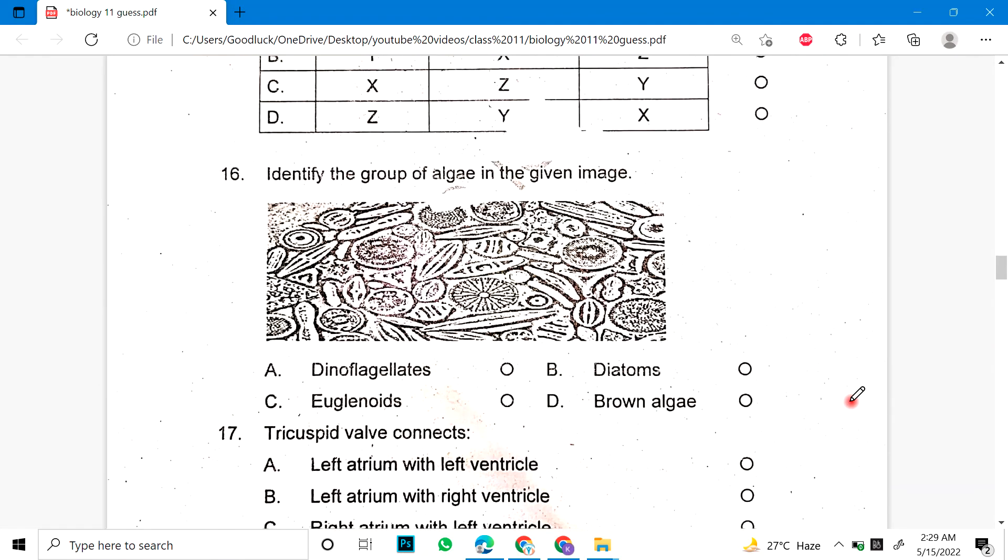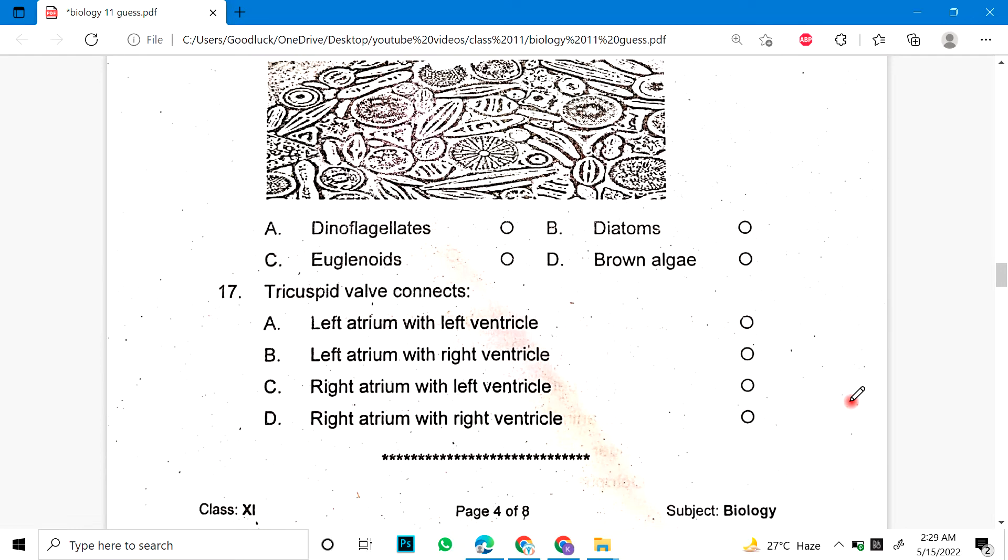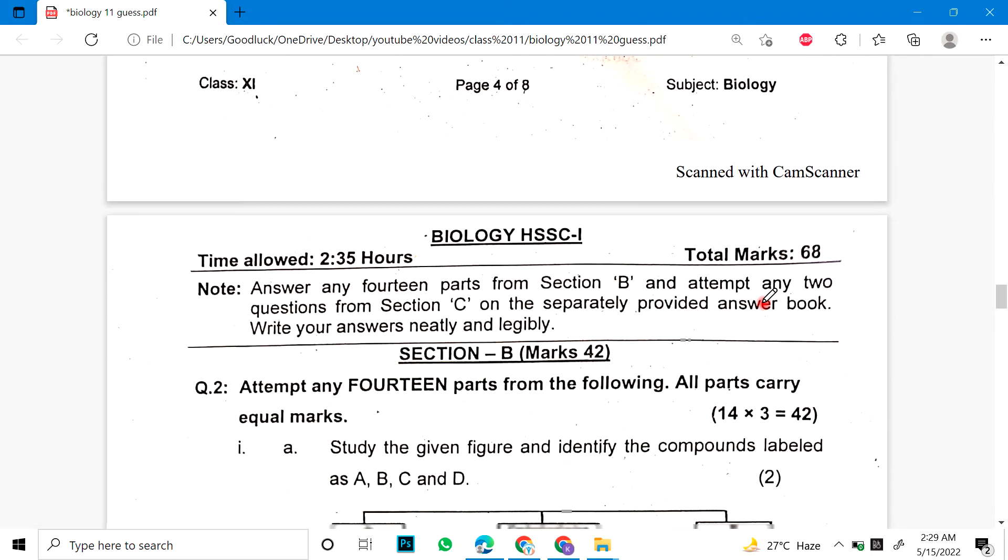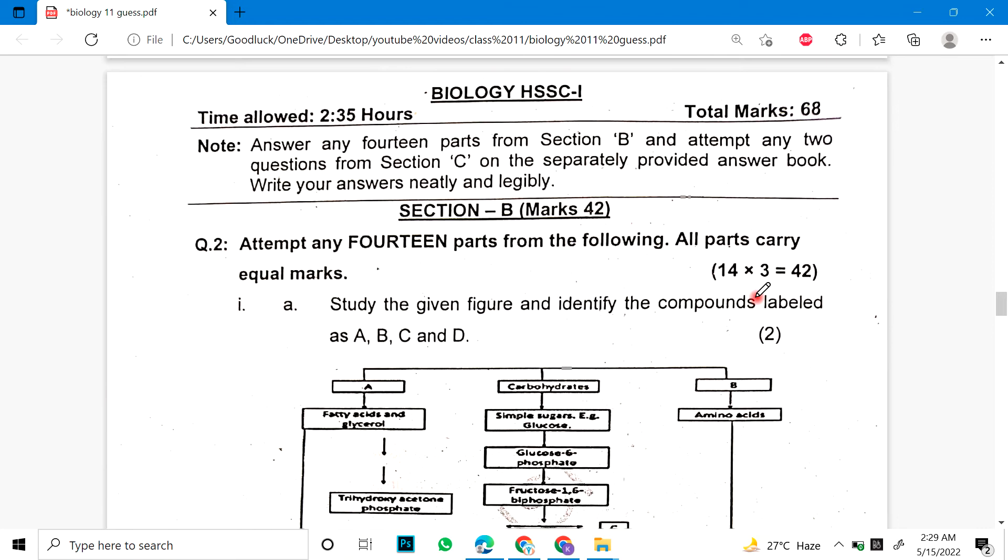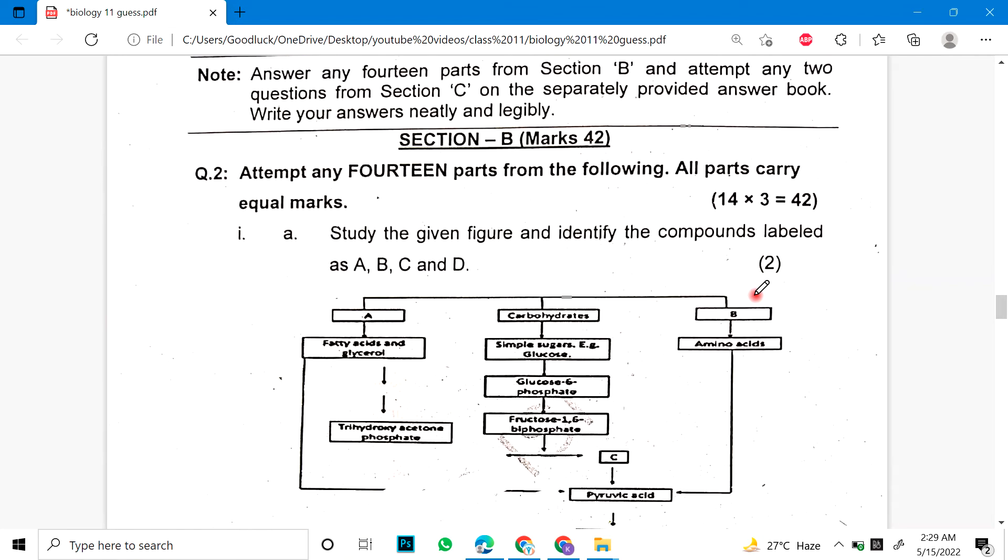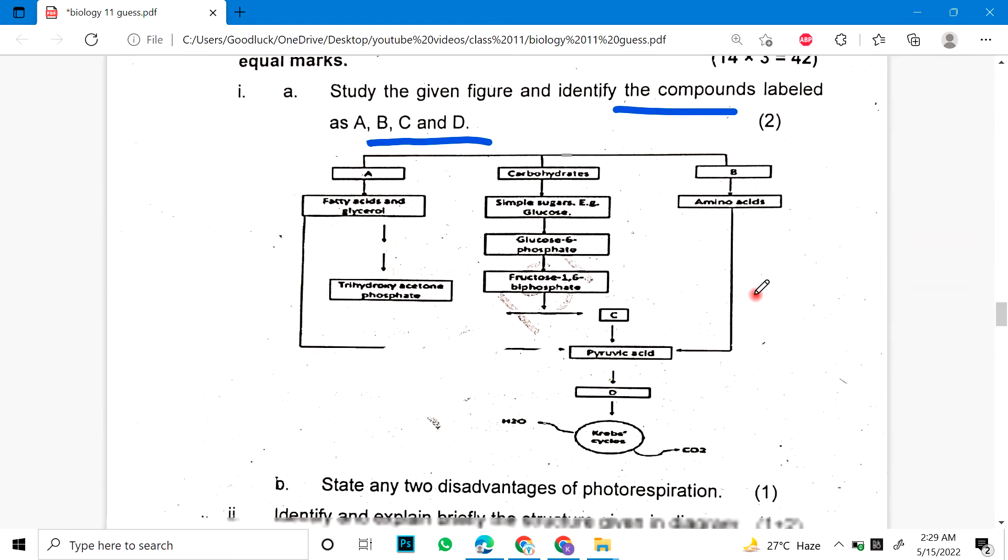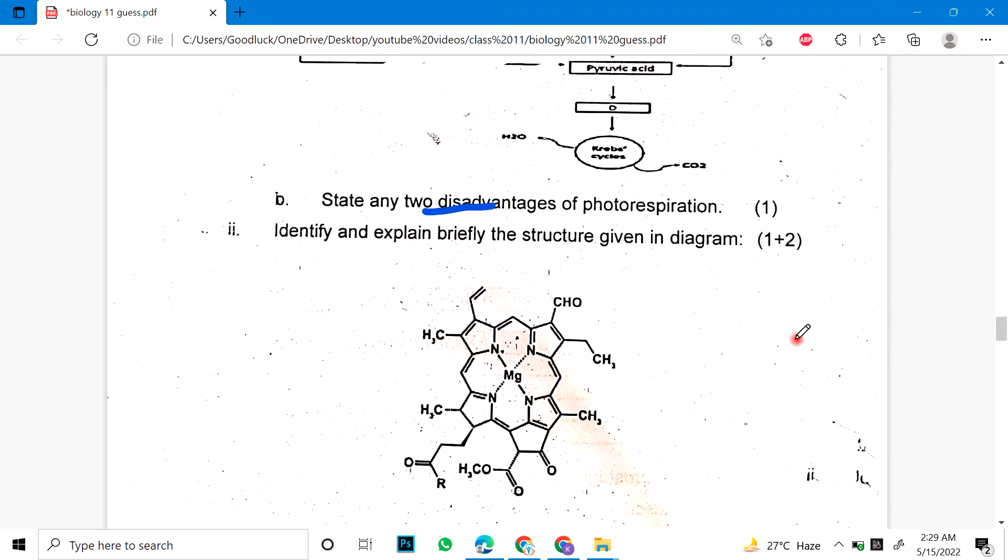Number 16: Identify the group of algae in the following image. Number 17: Tricuspid valve connects. These are 4 options. These are MCQs.